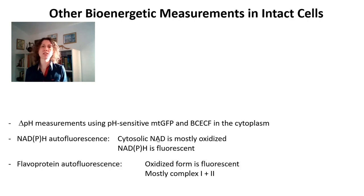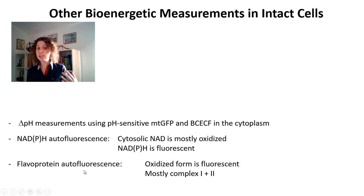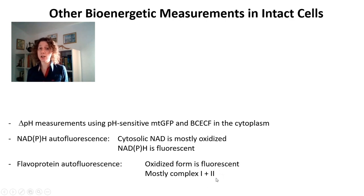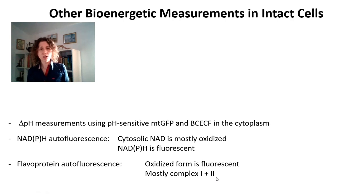Another thing that has autofluorescence in mitochondria are flavoproteins. Flavins are fluorescent when oxidized — it's the opposite of NADH — and there are lots of flavins in mitochondria. Autofluorescence from flavins in mitochondria is thought to be mostly complexes 1 and 2, but it can include other flavoproteins, including those in the matrix and not only in the inner mitochondrial membrane.